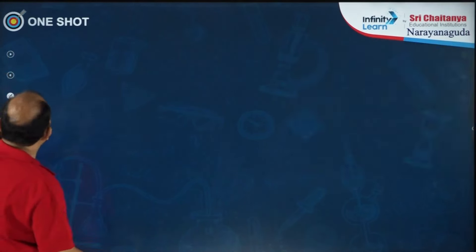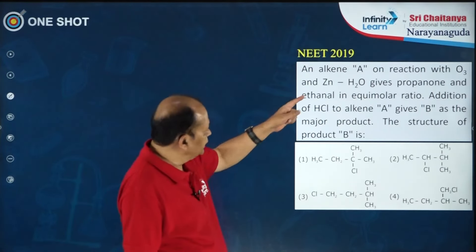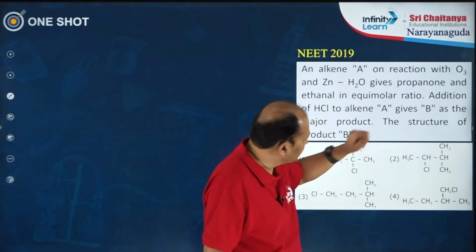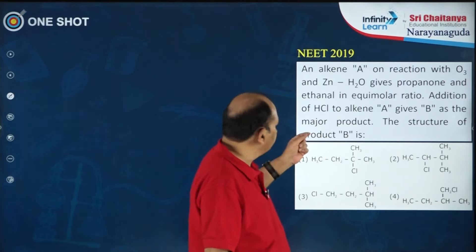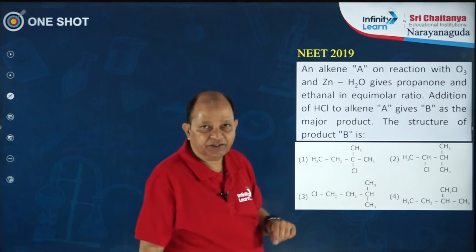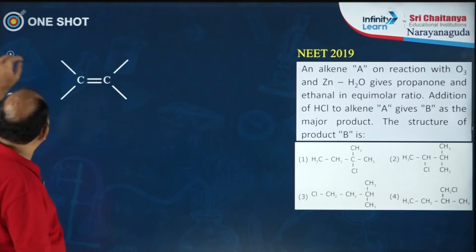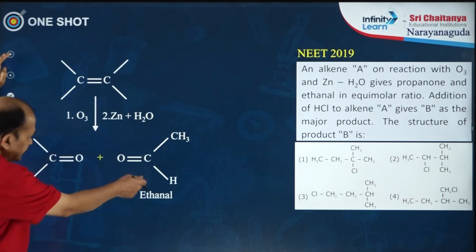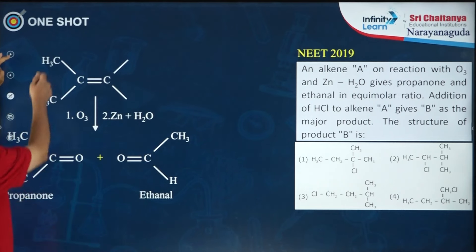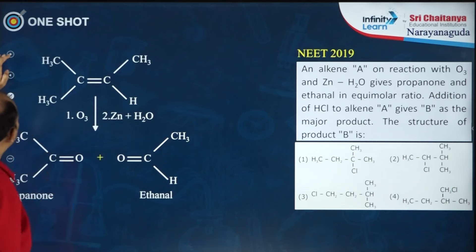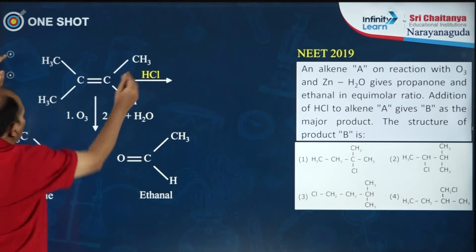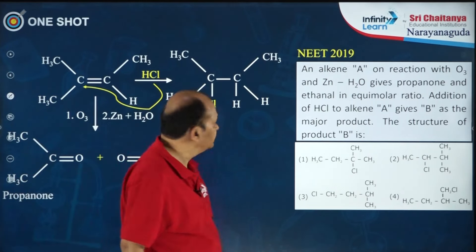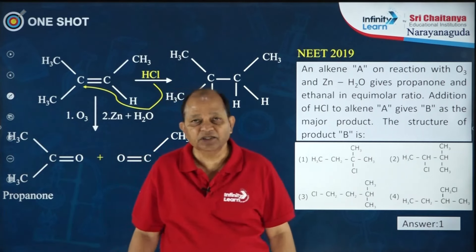One more example from NEET 2019: an alkene A on reaction with ozone and Zn/H2O gives propanone and ethanal in equimolar ratio. From propanone (two methyl groups needed) and ethanal (one methyl and one hydrogen), the alkene must have two methyl groups on one carbon and a methyl and hydrogen on the other — giving 2-methylbut-2-ene. Addition of HCl to this alkene A: the negative Cl⁻ goes to the carbon having fewer hydrogens (Markovnikov), giving option 1 as the right answer.